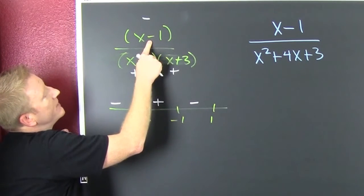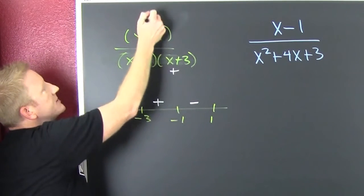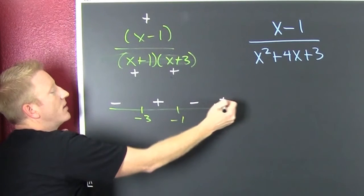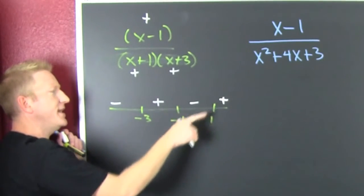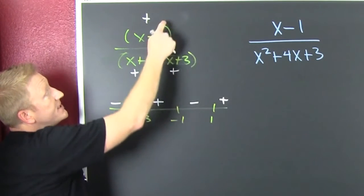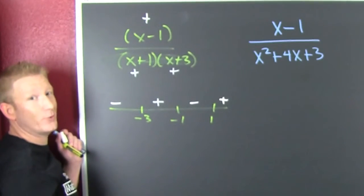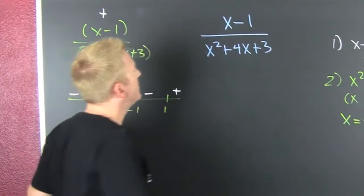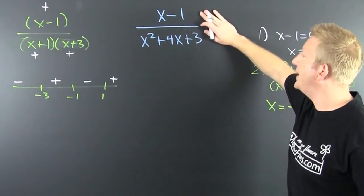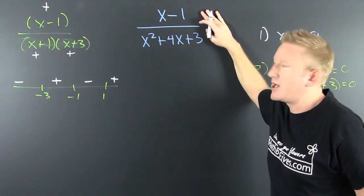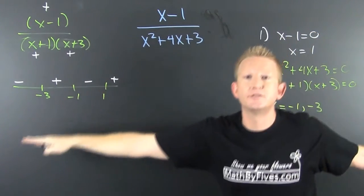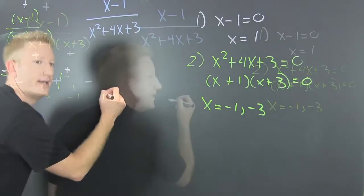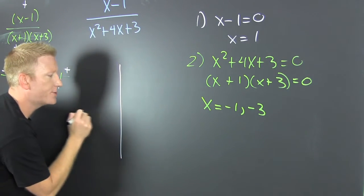To the right of 1, I pick 5: I get (5-1) = 4, (5+1) = 6, (5+3) = 8 — all positives. Note they won't always alternate sign; if any factor has even multiplicity it won't change. Next step in the game plan: end behavior. The denominator is bigger in degree, so the function goes to zero for large and small values of x.